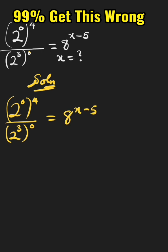We continue by applying the power law of indices. For the numerator, we change to 2 raised to the power of 0 times 4, which gives us 0. For the denominator, we multiply the power: 2 raised to the power of 3 times 0, which gives us 0. This equals 8 raised to the power of x minus 5.